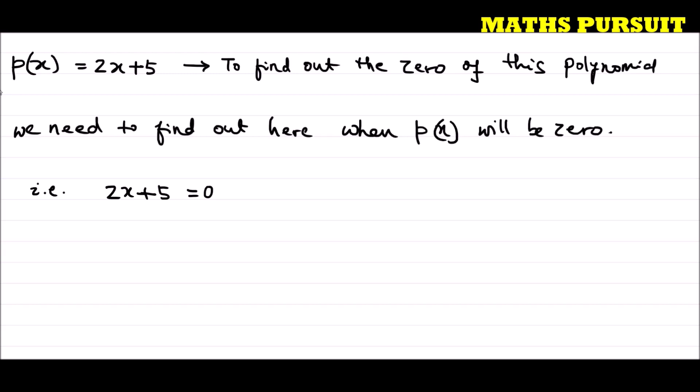Or I can write 2x = 0 - 5. How? Just I moved this +5 to the right hand side of this equation. Or I can write 2x = -5.